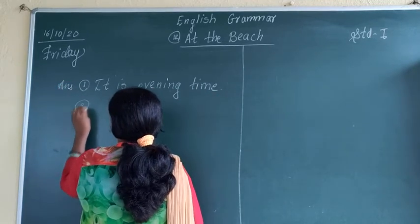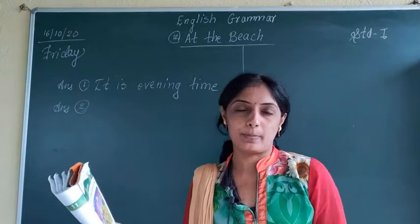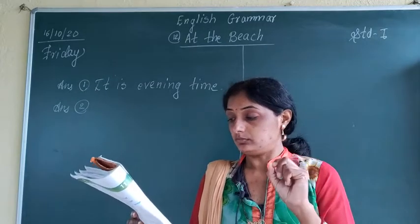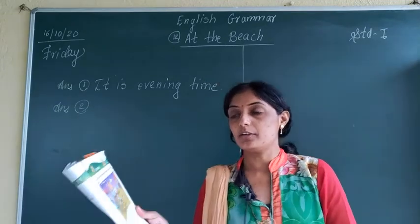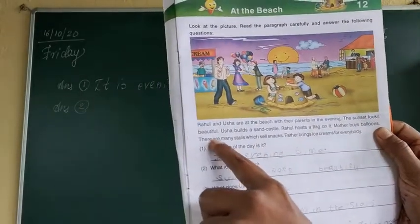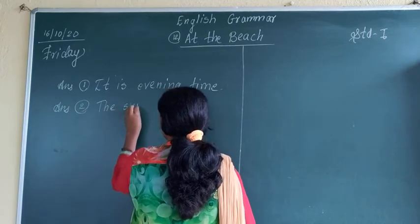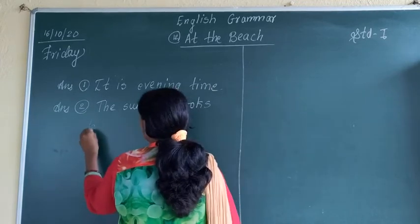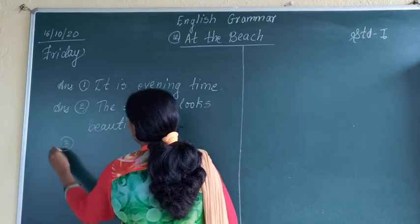Second question: what looks beautiful? There was one sentence — what looks beautiful? The answer is: sunset. Very good. The sunset looks beautiful. So our second answer is: the sunset looks beautiful.